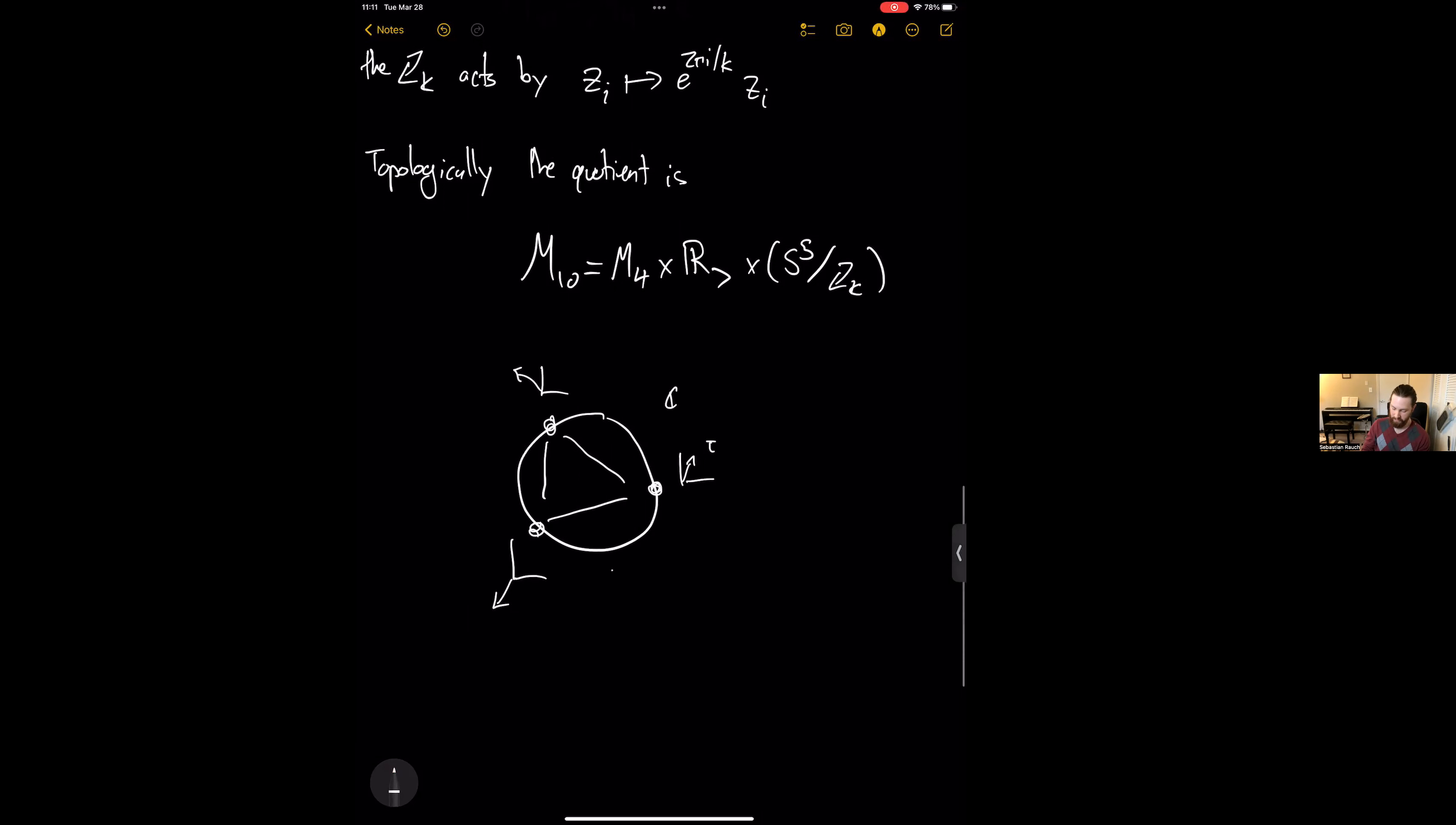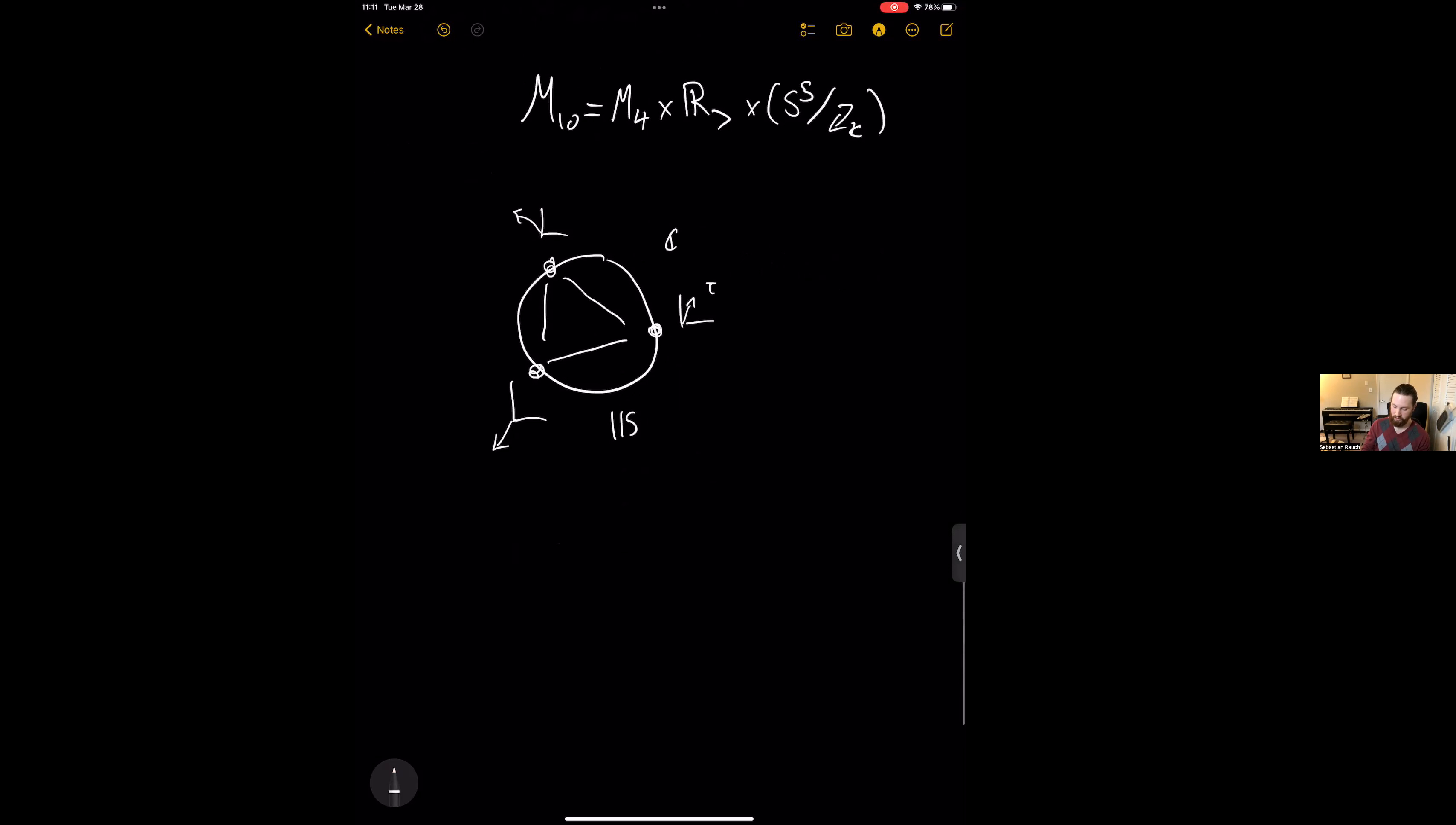And so the idea is that under this quotient, of course, in this case, S1 mod ZK is just S1, so that's slightly misleading. But importantly, we do see that the complex structure is actually pinned to a fixed point of this rho K action.